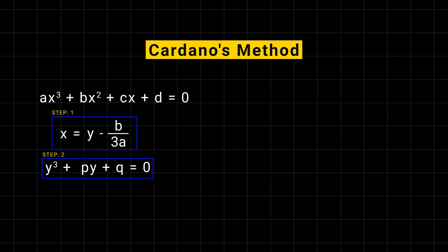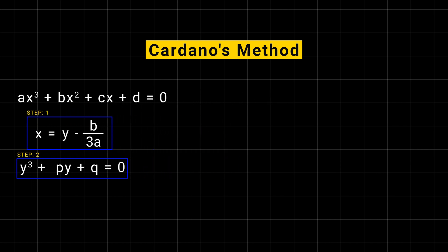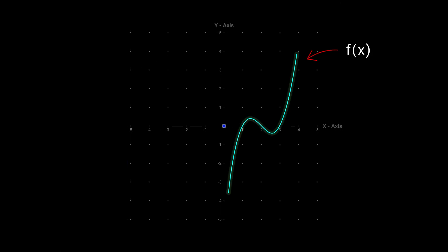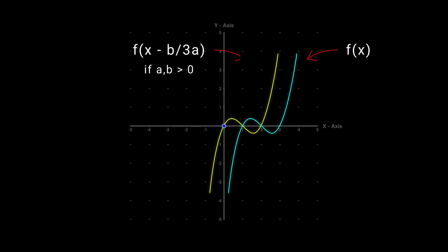To demonstrate Cardano's method, let's solve the cubic equation x cubed minus 6x squared plus 11x minus 6 equal to 0. First, we substitute x equal to y minus b over 3a to eliminate the quadratic term, giving us the depressed cubic form. When we look at the graph, we can clearly see that the graph has shifted toward the left.